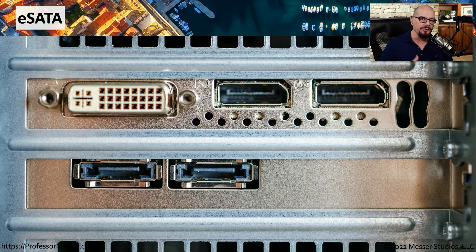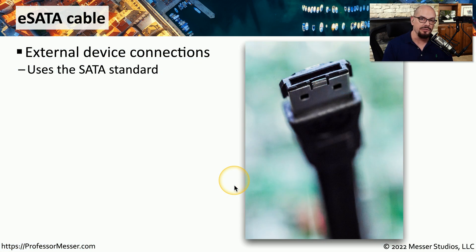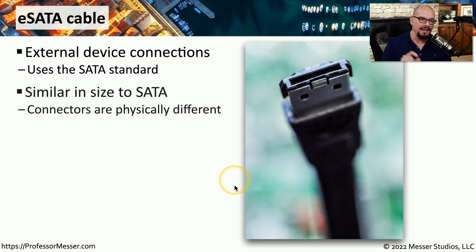As mentioned earlier, there's not only this internal connection for SATA — there's also an external version called eSATA. On this device, there is an eSATA adapter card with two separate external SATA links built into the computer itself. These use the same standard for connectivity that we have with our internal SATA connections, but the connector itself, although it looks physically similar to the internal connector, is a very different connector type when you're using eSATA.